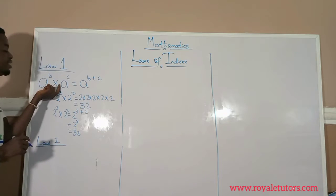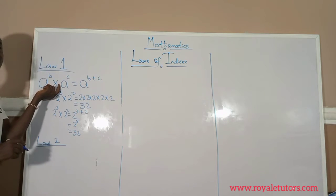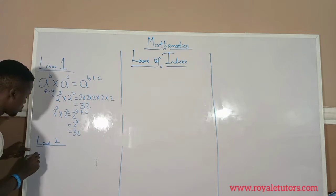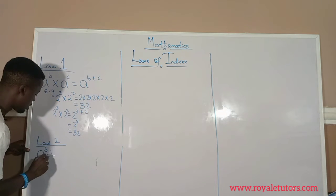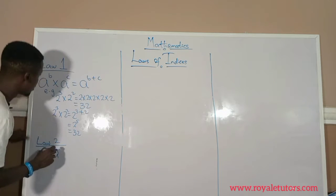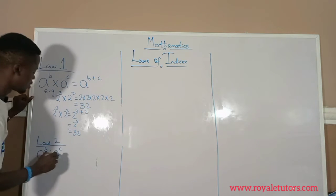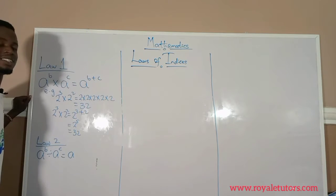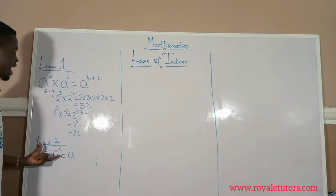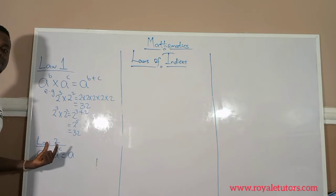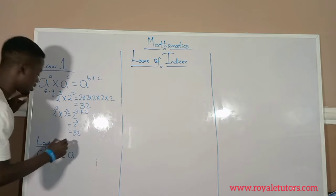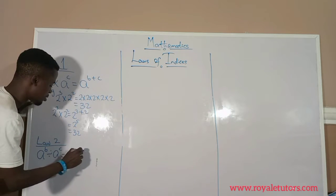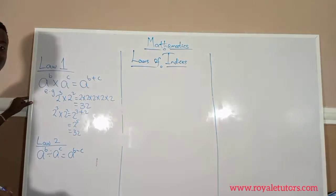What if we have division here instead of multiplication? We have a raised to power b divided by a raised to power c. You still pick one of the bases, but this time instead of adding the powers, you find their difference — the first one minus the second one: a raised to power b minus c.